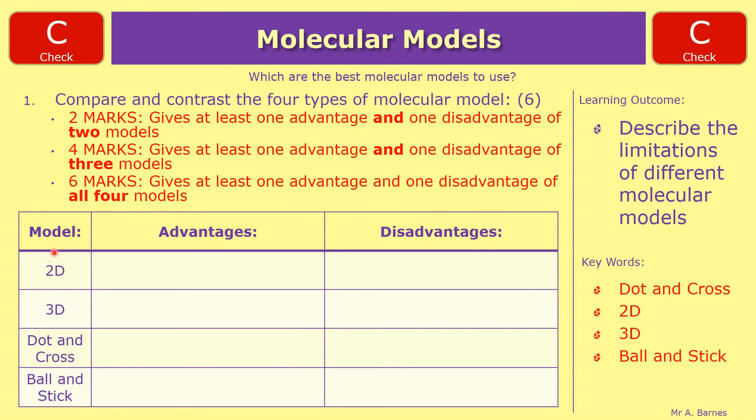For four marks, you needed it for three models, and for six marks you needed an advantage and a disadvantage of all four models. So as a bit of a recap then, let's have a look through.